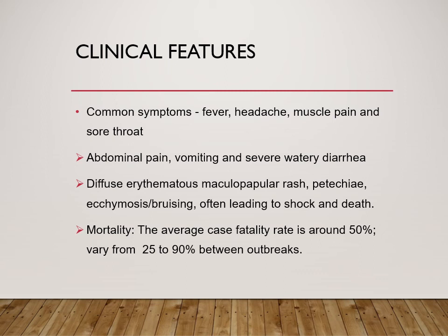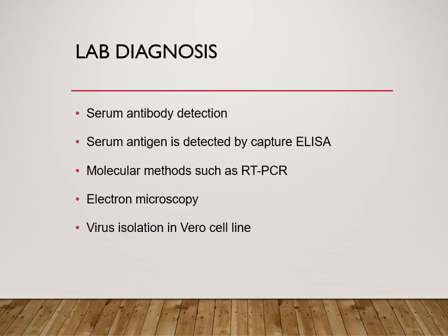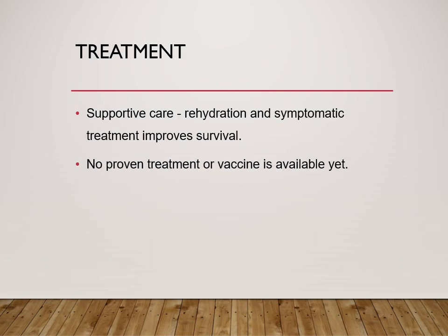Diagnosis of Ebola uses serum antibody detection, antigen detection, and molecular methods — molecular methods are preferred given the high mortality rate. Electron microscopy and virus isolation in cell lines are also used. There is no specific treatment and no particular vaccine; only symptomatic treatment — rehydration and supportive care — is given.